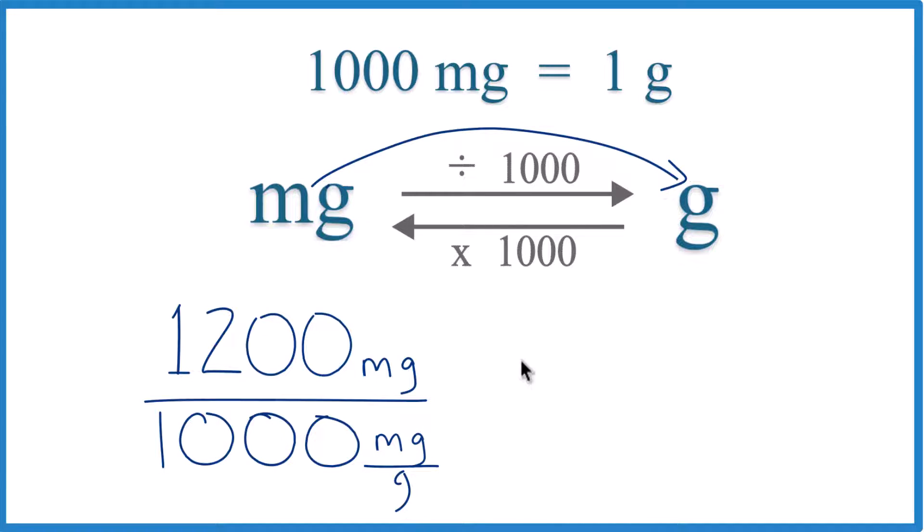But take a look at the units here. We have 1,200 milligrams. That's what we're given. And we divide by 1,000 milligrams per gram. That's the conversion factor. Because this way, milligrams cancel out. We're left with grams. That's what we're looking for.